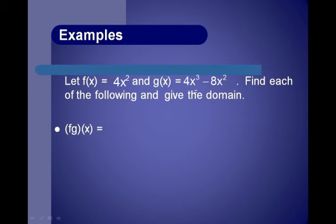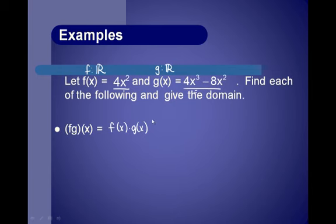Let f of x equal 4x squared and g of x equal 4x cubed minus 8x squared. The domain of f is all real numbers, and the domain of g is all real numbers, since neither has fractions or square roots. For f times g of x, that's f of x times g of x. Using the distributive property to multiply 4x squared by 4x cubed minus 8x squared, we get 16x to the fifth minus 32x to the fourth. The domain is all real numbers.